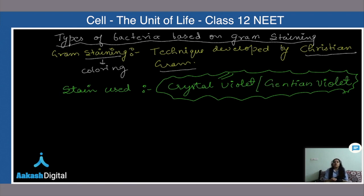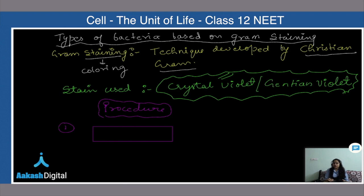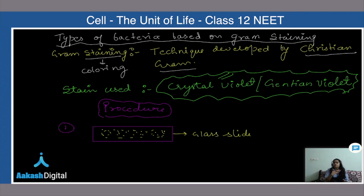Next is the procedure. First you have to know the procedure, then you will understand why these two types of bacteria are differentiated on the basis of Gram staining. First procedure: this is a glass slide — a rectangular glass structure on which we put our biological material and observe it under a microscope. We put the bacteria on the slide and spread it to form a thin layer of bacteria.